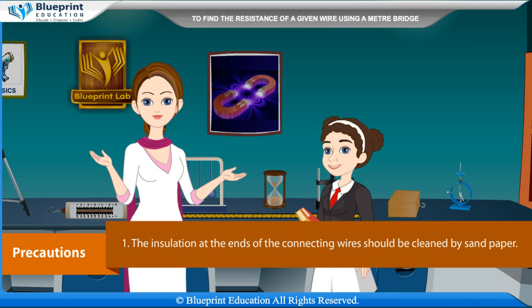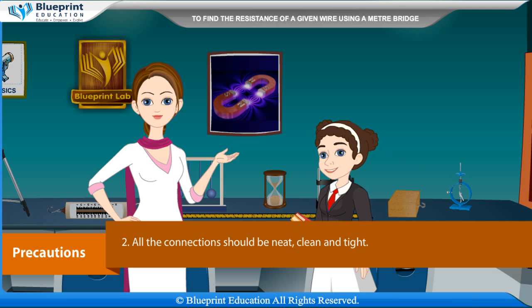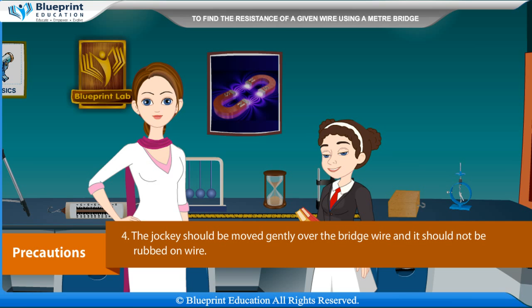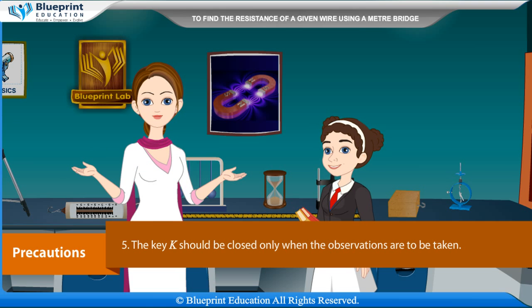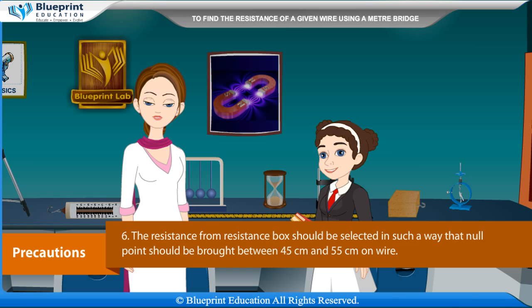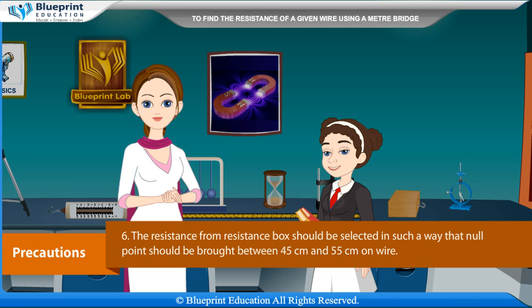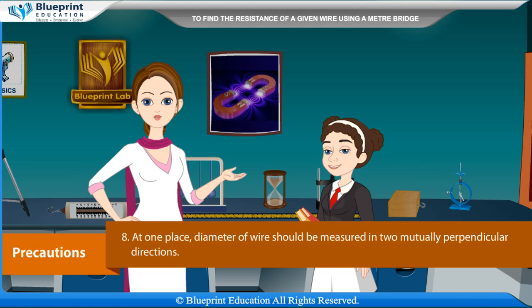Precautions: The insulation at the ends of connecting wires should be cleaned with sandpaper. All connections should be neat, clean, and tight. All plugs in the resistance box should be tight. The jockey should be moved gently over the bridge wire and not rubbed. Key K should be closed only when taking observations. Resistance from the box should be selected so the null point falls between 45 cm and 55 cm. A set square should be used to note the null point to avoid parallax error. At each position, the diameter of the wire should be measured in two mutually perpendicular directions.